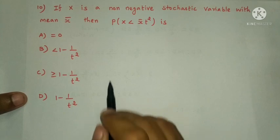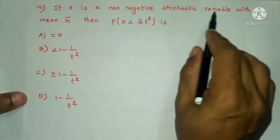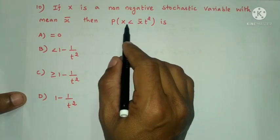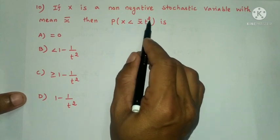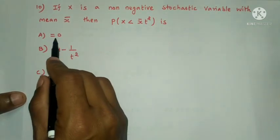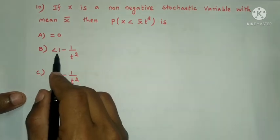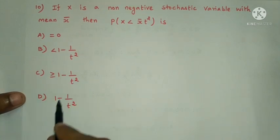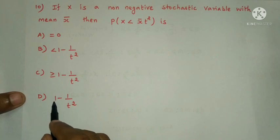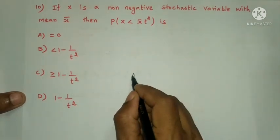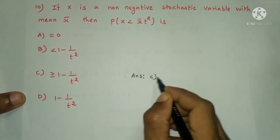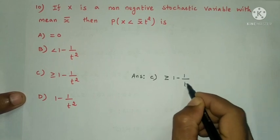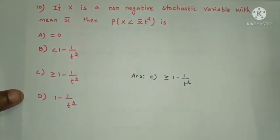Next question: if x is a non-negative stochastic variable with mean x-bar, then P(x ≥ x-bar × t²) is — Option A: equal to 0. Option B: less than 1 − 1/t². Option C: greater than or equal to 1 − 1/t². Option D: 1 − 1/t². The answer is option C: greater than or equal to 1 − 1/t².